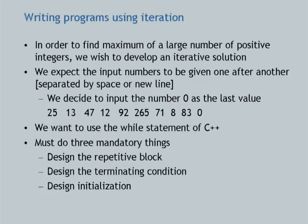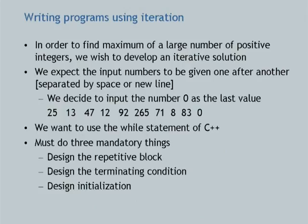We now generalize our problem of finding out the maximum of 5 numbers. We want to find the maximum of a large number of positive integers. I might give 5 numbers, 20 numbers, 200 numbers, 500 numbers. Now, how will you tell me that you have no more numbers to give? We agree on a protocol: since all numbers are positive integers, you will keep giving numbers and give a 0 at the end. So the input numbers come one after another, terminated by 0.